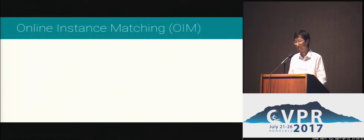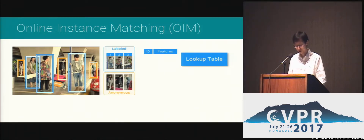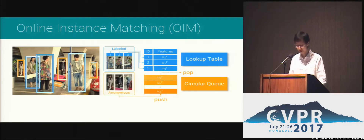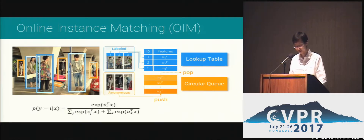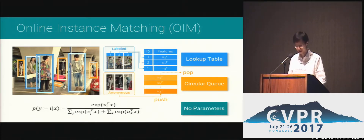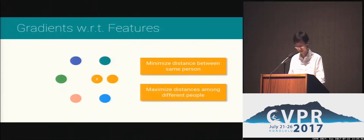To solve this problem, we propose OIM, the Online Instance Matching loss function. Given a scene, there are both labeled people with IDs and also anonymous people without IDs, like people in the background. For the labeled ones, we build a lookup table with ID-feature pairs. Once we find a labeled person, we update the feature V in the lookup table according to their ID. For the anonymous people, we build a circular queue to store their features. Once we find an anonymous person, we push it to the back of the queue and pop the head item if the queue is full. With these two feature buffers, we compute the probability for the i-th class: the numerator is the score between X and V_i, and the denominator is the scores between X and all the features in both the lookup table and the circular queue. Note that there are no parameters to learn — all these are just feature buffers. The gradients essentially minimize the distance between the same person while maximizing the distances among different people.